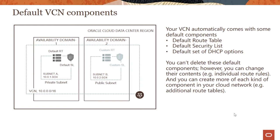Your VCN automatically comes with some default components: a default route table, a default security list, and a default set of DHCP options. We have been using some of these until now — the default route table and the default security list — but we have not really looked into the default set of DHCP options. You cannot delete these default components, however you can change their contents. You can change what rules go in there and you can create more of each kind, such as more route tables or security lists, as we have done in the previous modules.